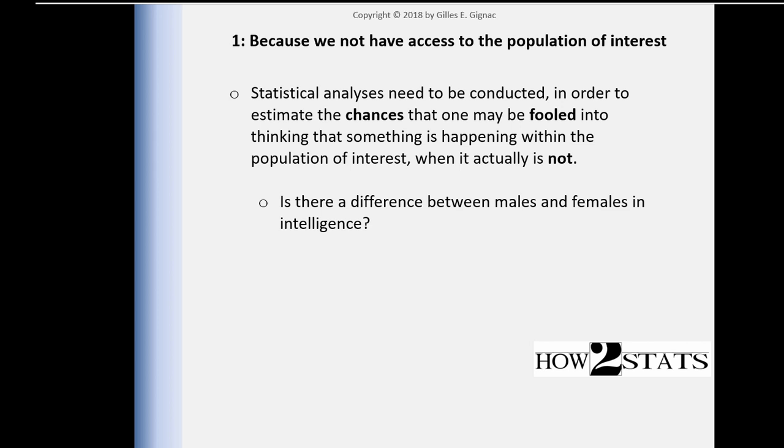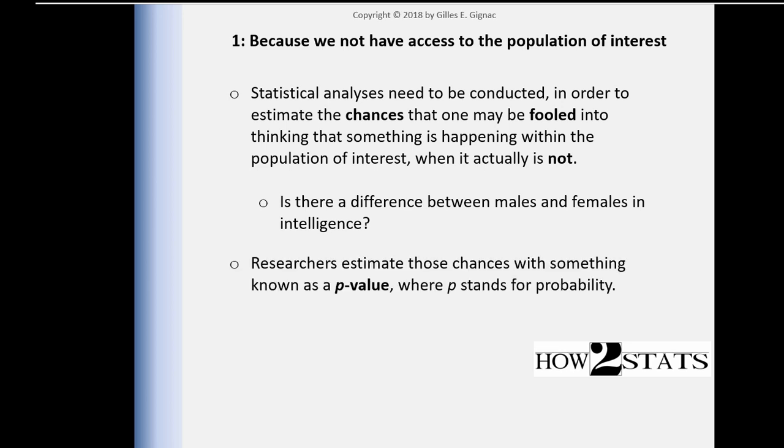In addition to the convenience sample issue, we need to estimate the probability that we may be fooling ourselves into thinking something is happening in the population when it actually is not. And what we call that chance or probability in statistics is a p-value.